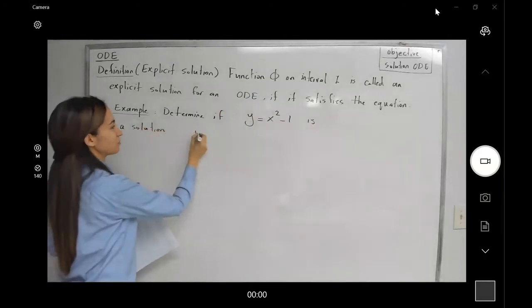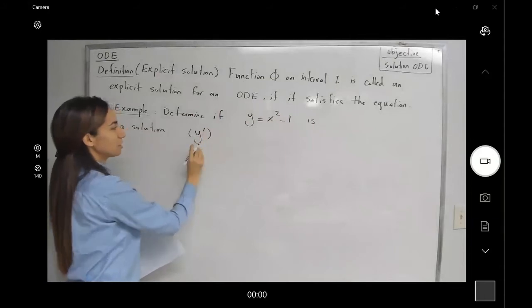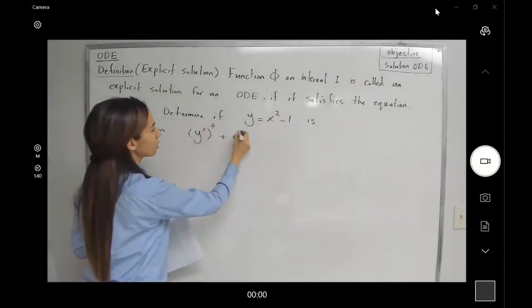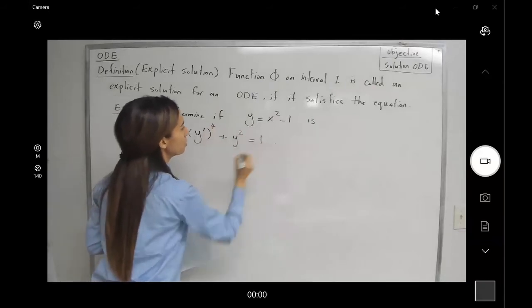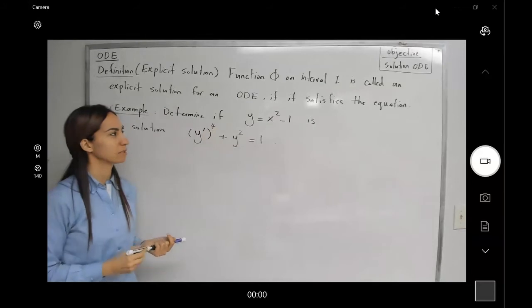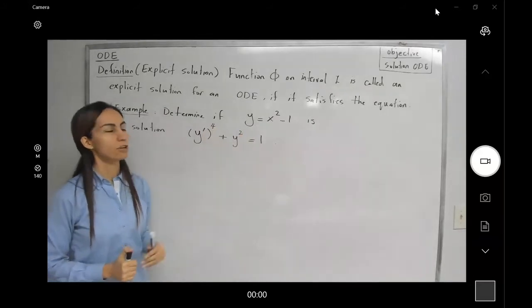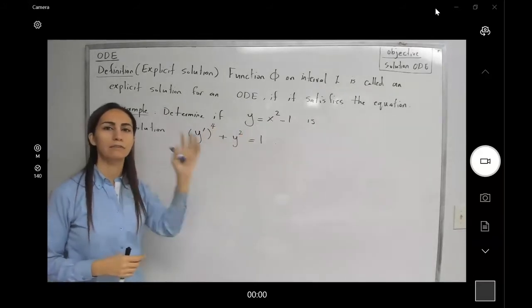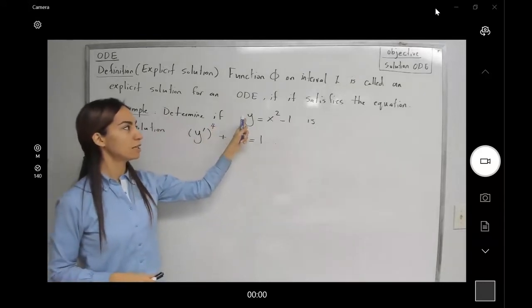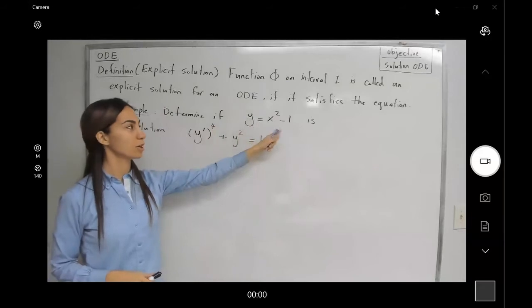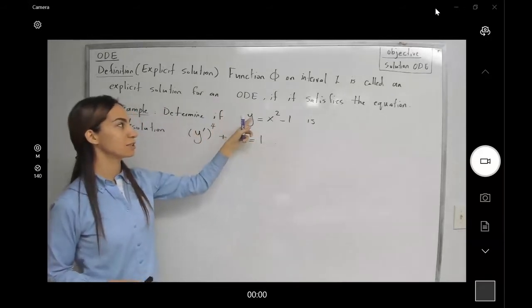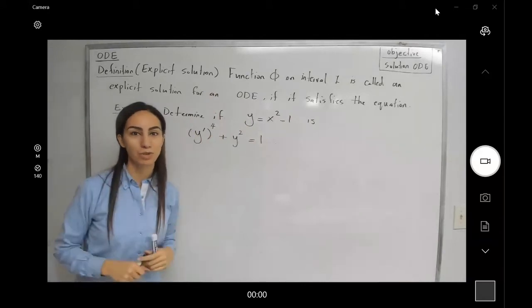of this ODE: (y')⁴ + y² = 1. We have an explicit function defined on the real line from negative infinity to positive infinity. As you can see, y = x² - 1. Y is isolated on one side and explicitly defined in terms of x.